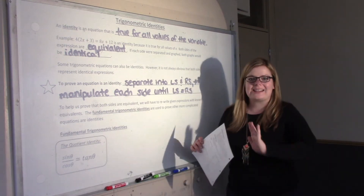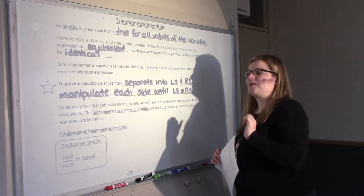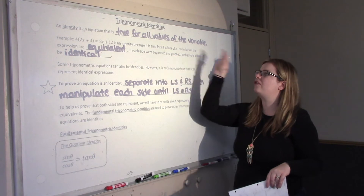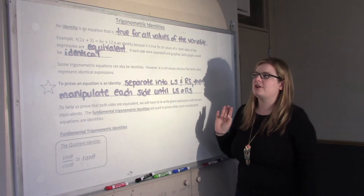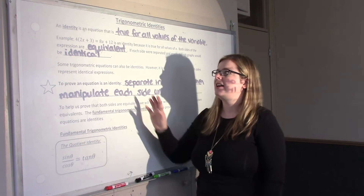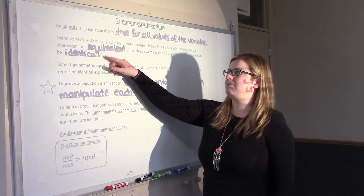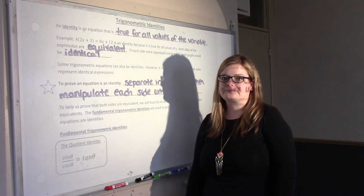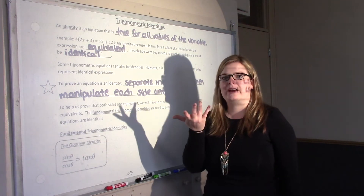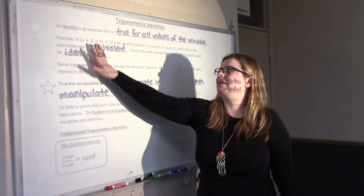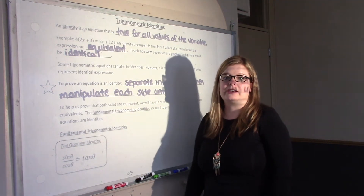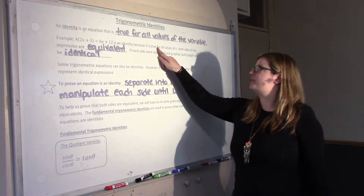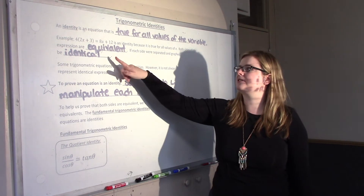So, first let's talk about what an identity is versus an equation. An identity is an equation that is true all the time — it's true for all values of the variable. If you go back to linear equations, something like this would be an identity because no matter what X you put in, you'll get that left side equals right side. With equations, it's only true for one value of X — there's only one point of intersection.